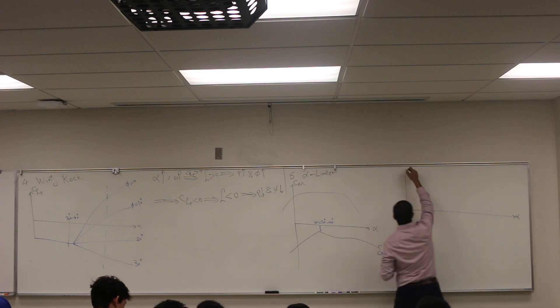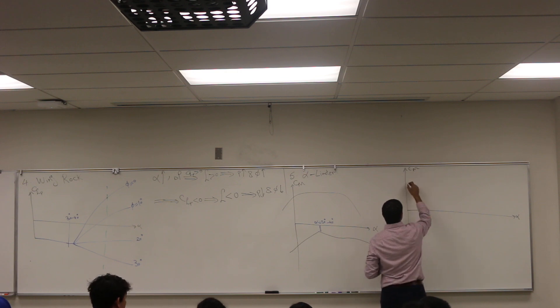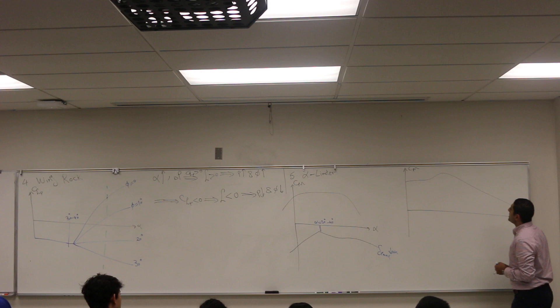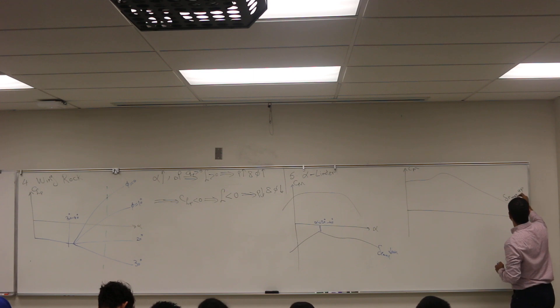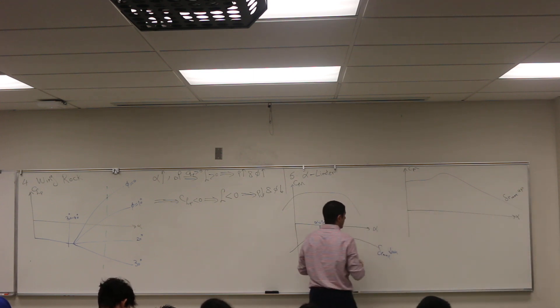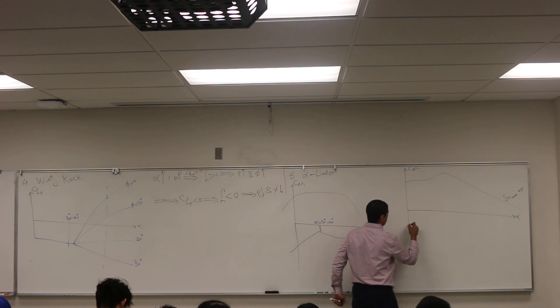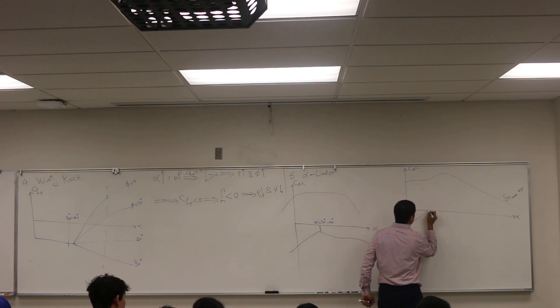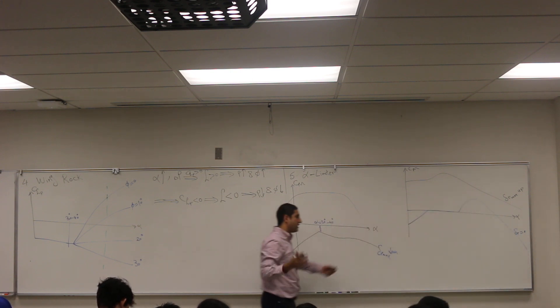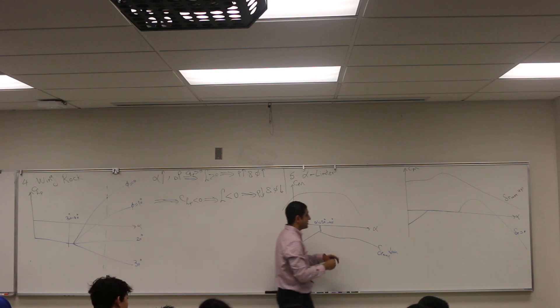This is alpha, this is Cm. Again, this is the maximum delta elevator up, and this is zero delta elevator, something like this. This is delta elevator, the natural characteristics of the airplane without any elevator deflection.